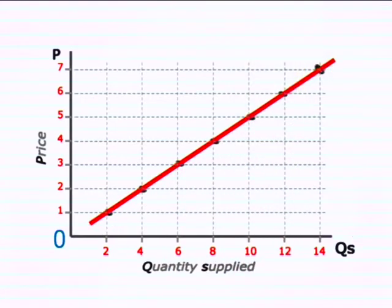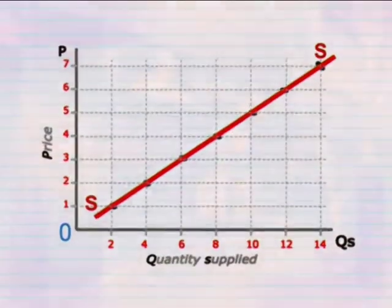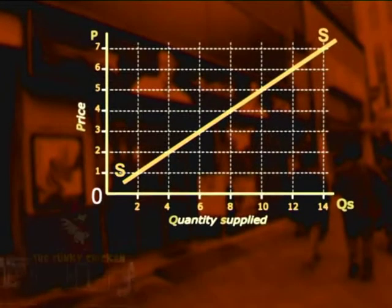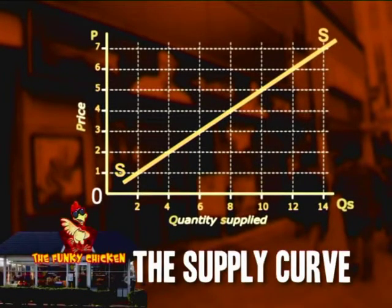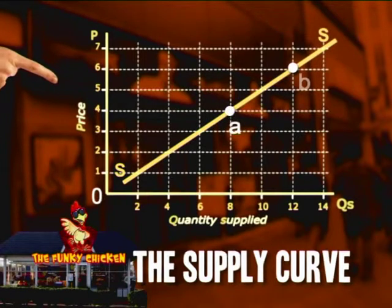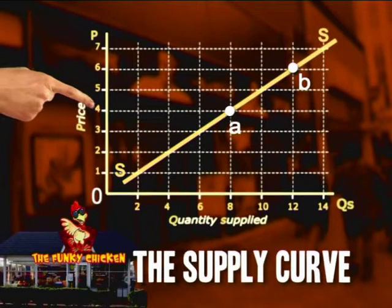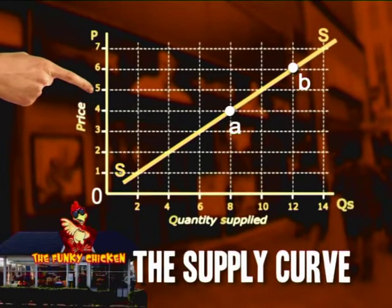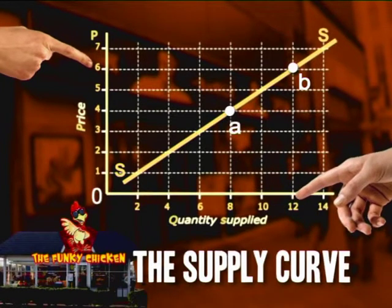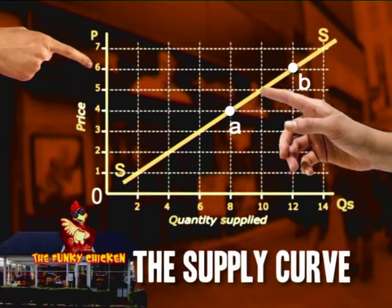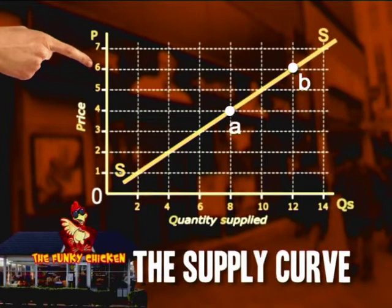When we draw a line joining the points and label it SS, we have our first supply curve, indicating the quantities of a good or service that the Funky Chicken plans to sell at each possible price. A movement from point A to B shows that as the price of the fried chicken increases from four rand to six rand, the quantity supplied increases too, from eight to twelve, and an upward movement along the curve takes place.